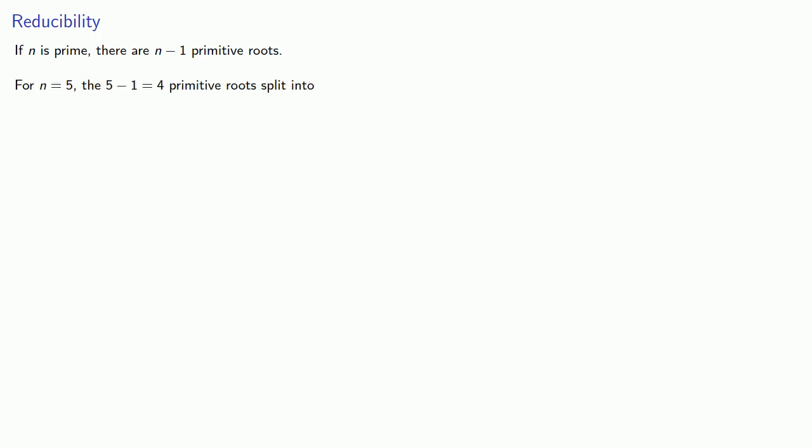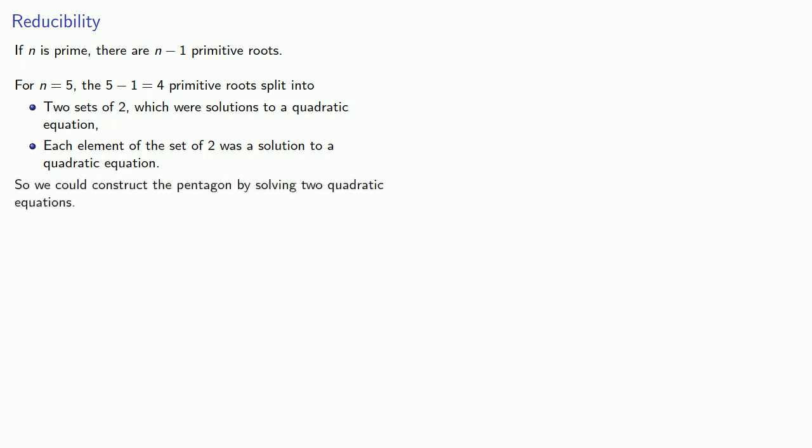On the other hand, if n equals 5, the 5 minus 1, 4 primitive roots split into 2 sets of 2, which were solutions to a quadratic equation, and each element of the set of 2 was a solution to another quadratic equation. And so we could construct the pentagon by solving two quadratic equations. And because these are quadratic, this can be done using compass and straightedge. So what is it that 7 minus 1, 6 has that 5 minus 1, 4 doesn't? The answer is that 6 has a prime factor other than 2.